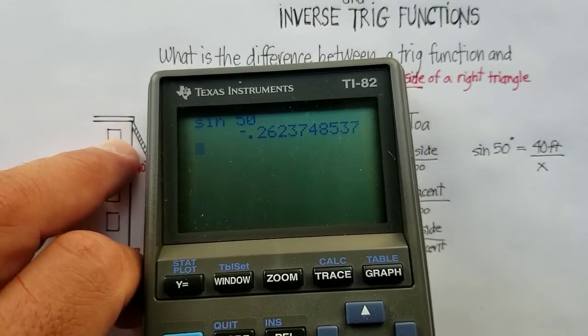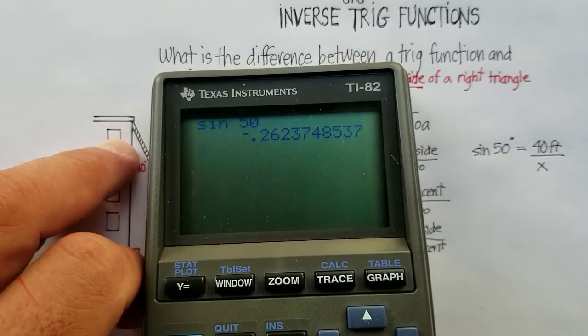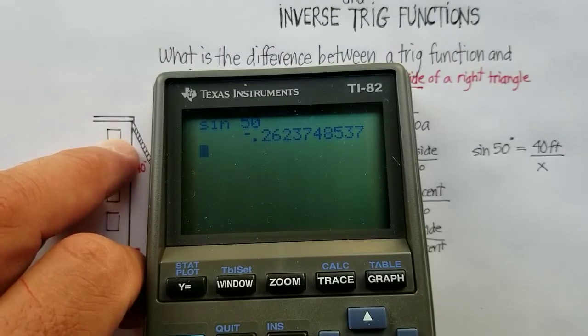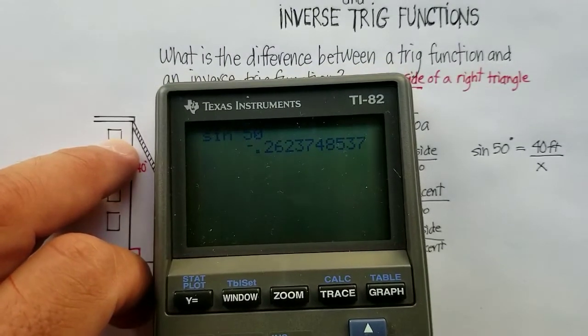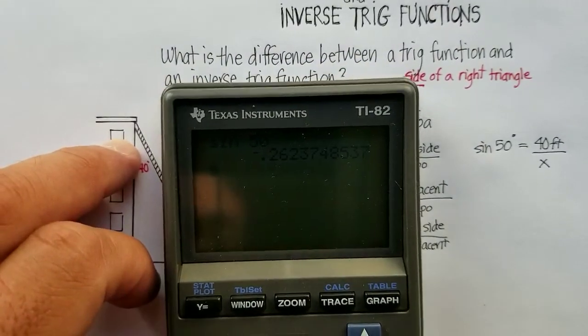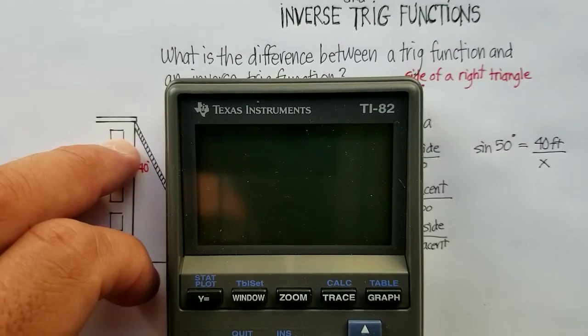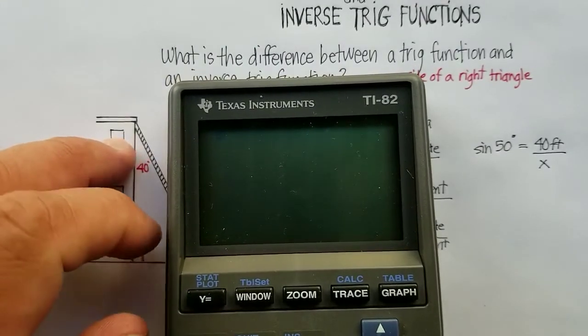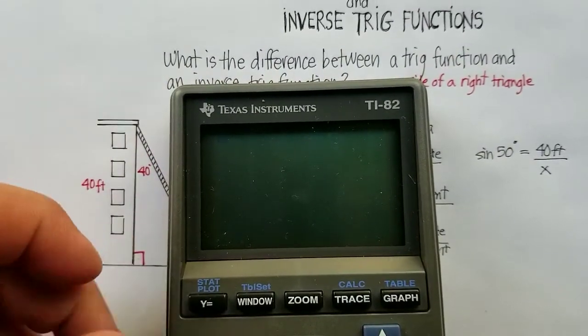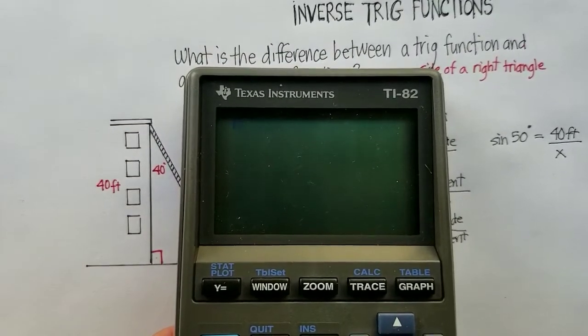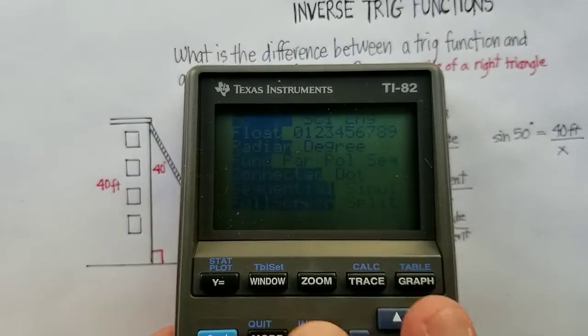And that equals 2.26. Oh, wait a minute. That's actually incorrect. I had it on radians. My mistake. Let's make sure that we have that on. Hold on. Let me just go ahead and change the mode.